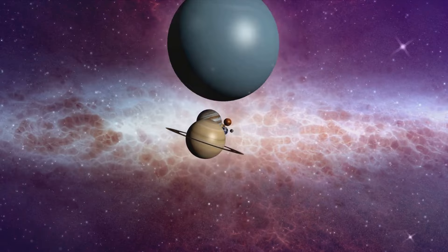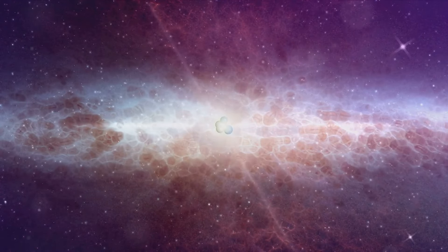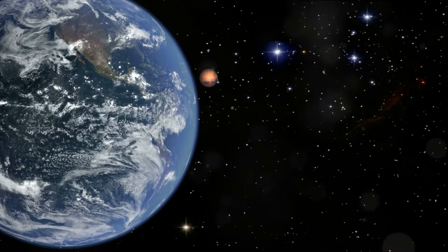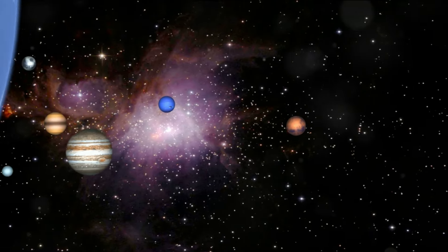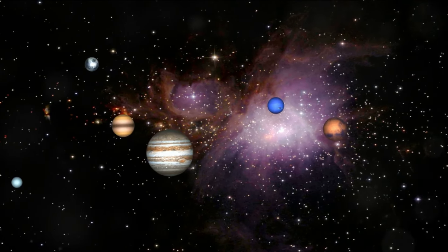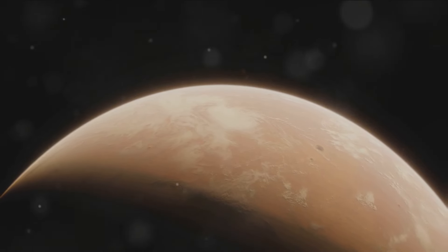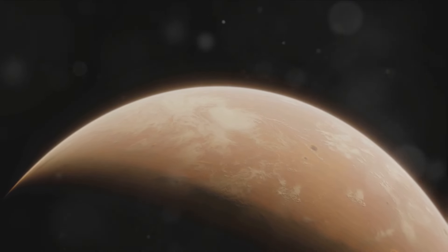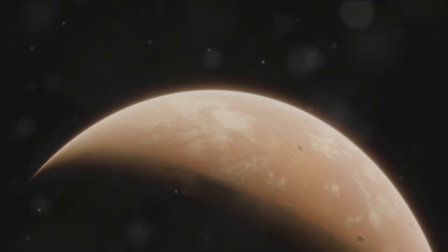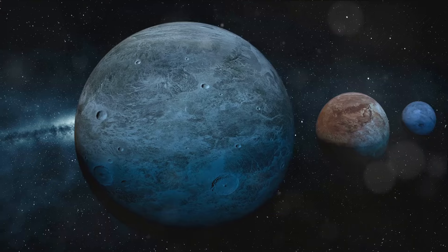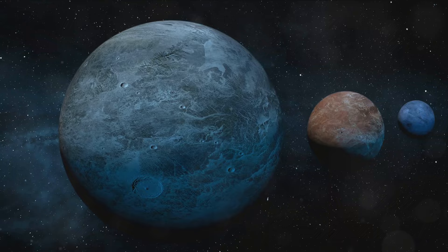What makes Gliese 581d even more compelling is its potential for liquid water. Water, in its liquid form, is a crucial ingredient for life as we know it. The possibility of liquid water indicates that Gliese 581d could, in theory, harbor life. This potential for life, while still theoretical, makes Gliese 581d a fascinating subject for further study and exploration. As we continue to push the boundaries of what we understand about the habitable zone, our exploration brings us to another exoplanet, Gliese 667cc.